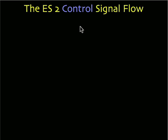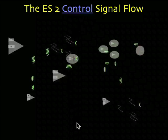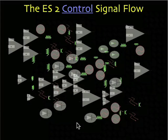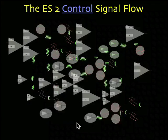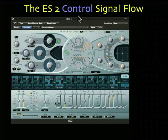Besides audio, there's another class of signals that flow through Logic, and these are control signals. The controllers are the different types of tools that we can employ to turn the knobs, to move the faders, to select things from the menus in the ES2.